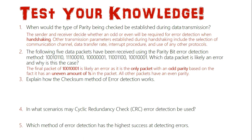How many ones there are determines odd or even parity. If there's an even amount of ones, it's even parity; if an odd amount, it's odd parity. All the other four packets have an even parity. It is possible that equal numbers of bit swaps could mean errors in other packets too — that is a known flaw of the parity bit error detection method.